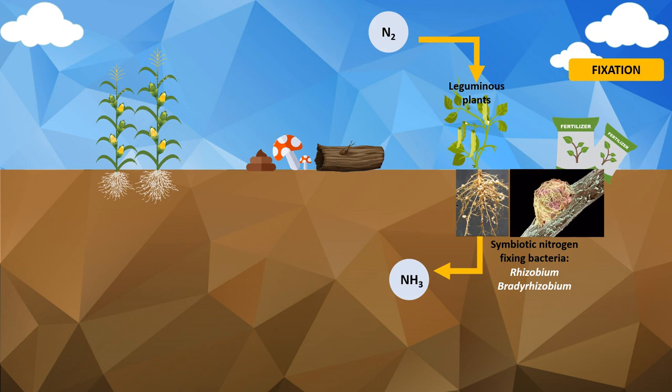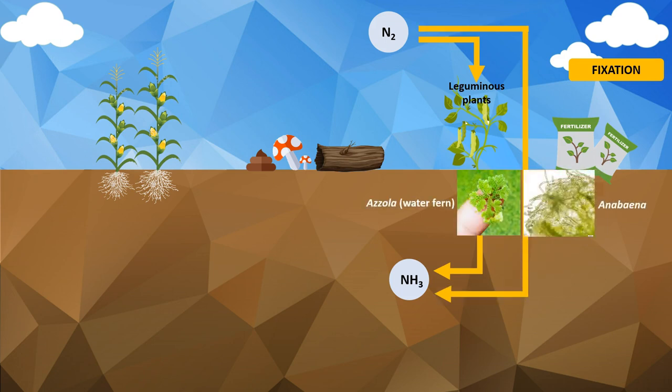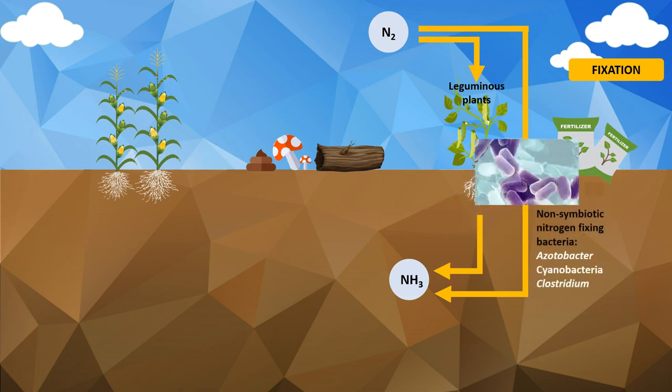Bacteria that are responsible for nitrogen fixation all rely on the nitrogenase enzyme. Nitrogen fixation can also be performed by free-living aerobic nitrogen fixers, such as the symbiotic association between Azolla and Anabaena, and non-symbiotic bacteria such as Azotobacter, Beijerinckia, cyanobacteria, and Clostridium.